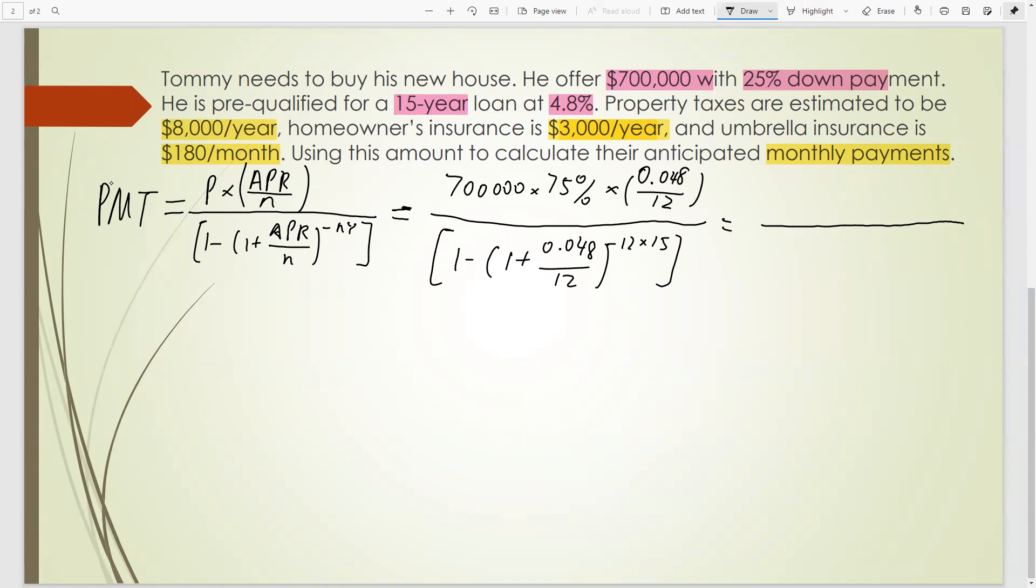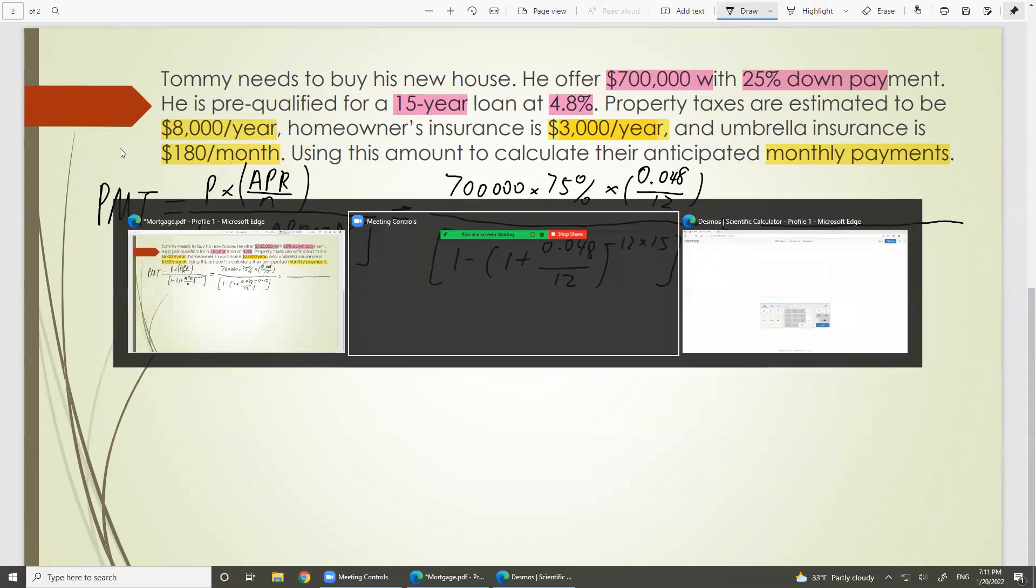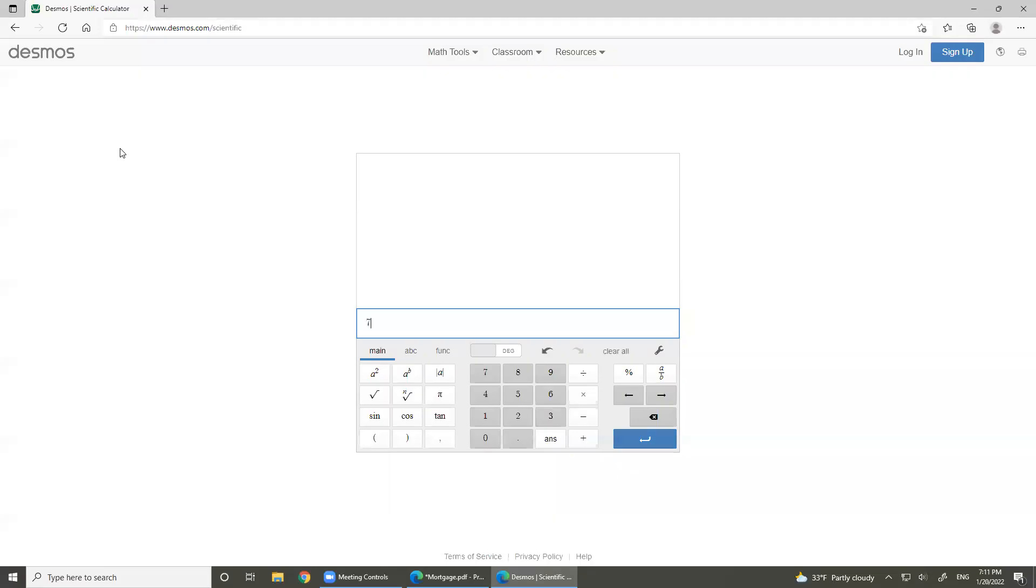So the numerator, that gives us the principle times the rate. 700,000 times 75% multiplied by 0.048 divided by 12. So 75% of 700,000 gives us the principle and times the rate over 12. That's 2,100.